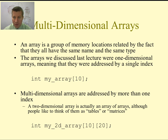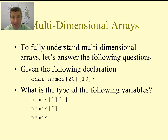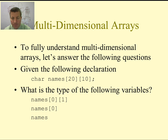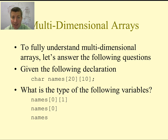So that is two-dimensional arrays. Let's look at this for a second. Let's say we have the declaration char names[20][10], where the size is 20 for the first index and 10 for the second. What is the type of the following variables? First: names sub-zero sub-one — that is going to be an individual character, just a char. Second: names sub-zero — remember we have an array of arrays, so names sub-zero is actually a one-dimensional array that has 10 elements. And names itself is a two-dimensional array where the first index has 20 elements, zero to 19, and the second index has 10 elements, zero through nine.